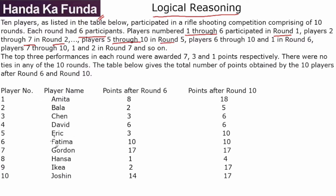What happens at round 6 and beyond? Well, round 6 has players 6, 7, 8, 9, 10 and 1 — so it repeats, going in a circle like a clock. The top 3 performers were awarded 7, 3 and 1 points. There were no ties in any of the 10 rounds.